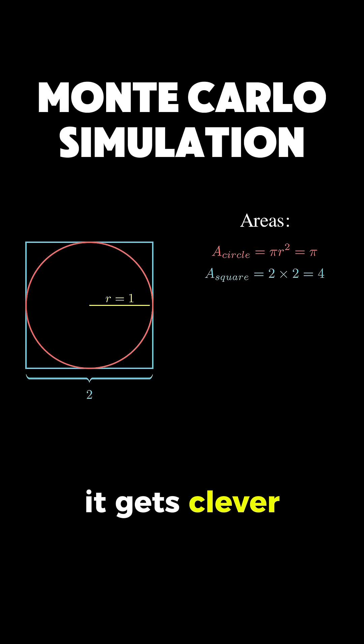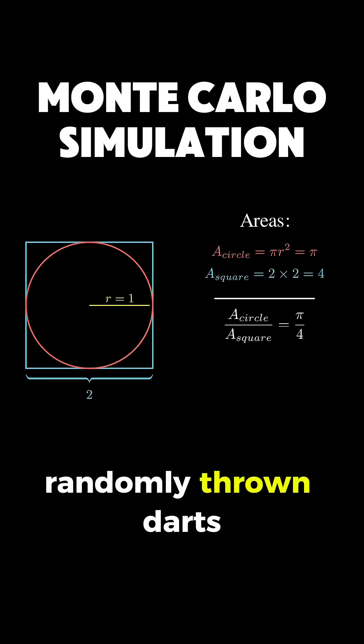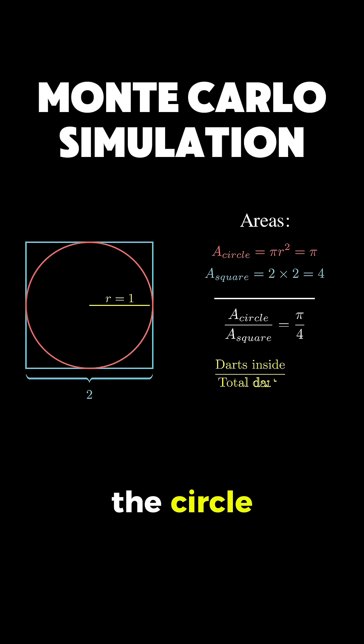Now, here's where it gets clever. The ratio of the circle's area to the square's area is pi divided by 4, and this ratio also tells us what fraction of randomly thrown darts should land inside the circle versus the total number thrown at the square.